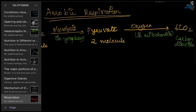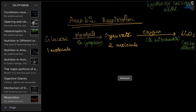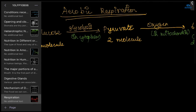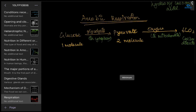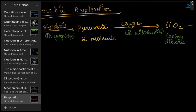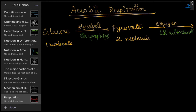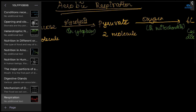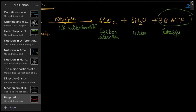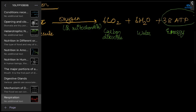In the previous class we talked about aerobic respiration. In aerobic respiration, pyruvate is broken down into carbon dioxide, water, and energy in the presence of oxygen, and it happens in the mitochondria.